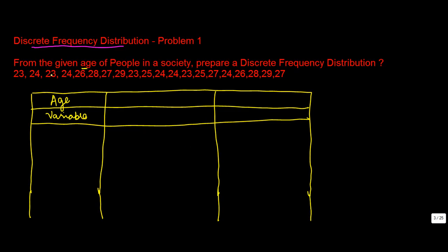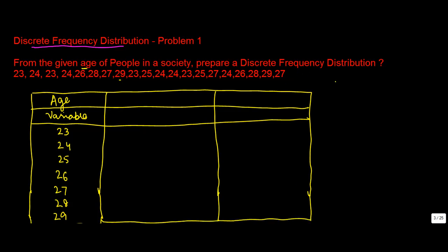Now, 23 seems to be the minimum age and 29 seems to be the maximum age. So we have 23, 24, 25, 26, 27, 28, and 29. Step one was to list down the variable. Step two is to find out the tally marks.